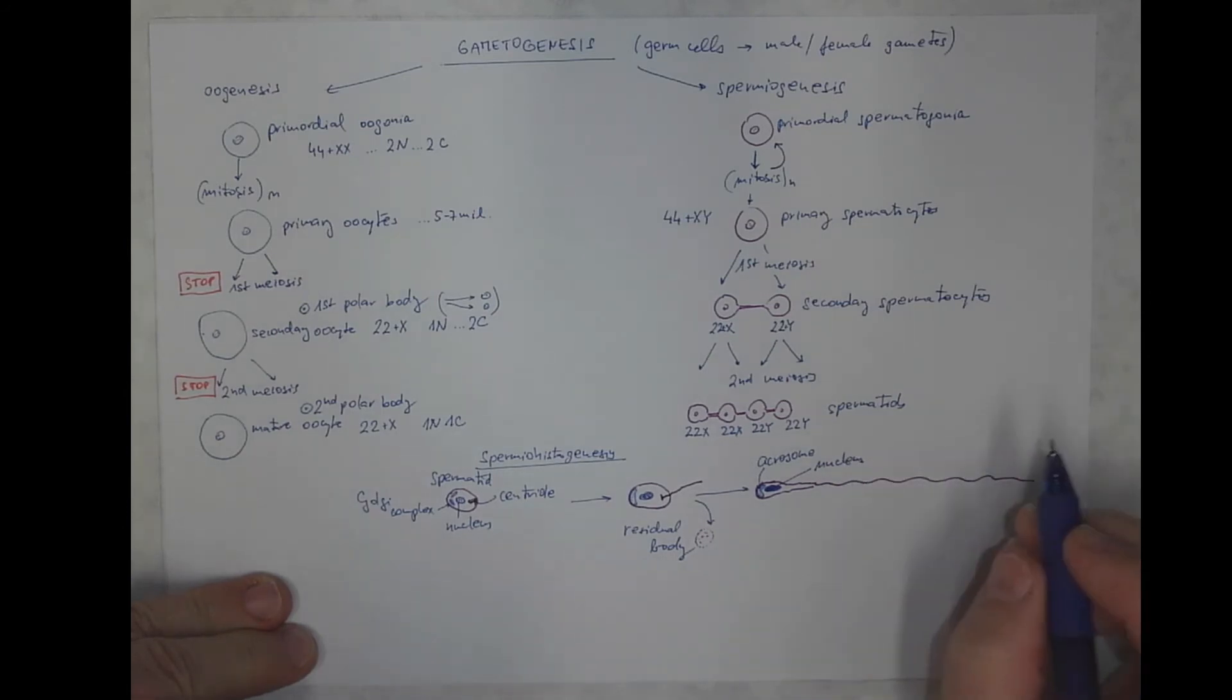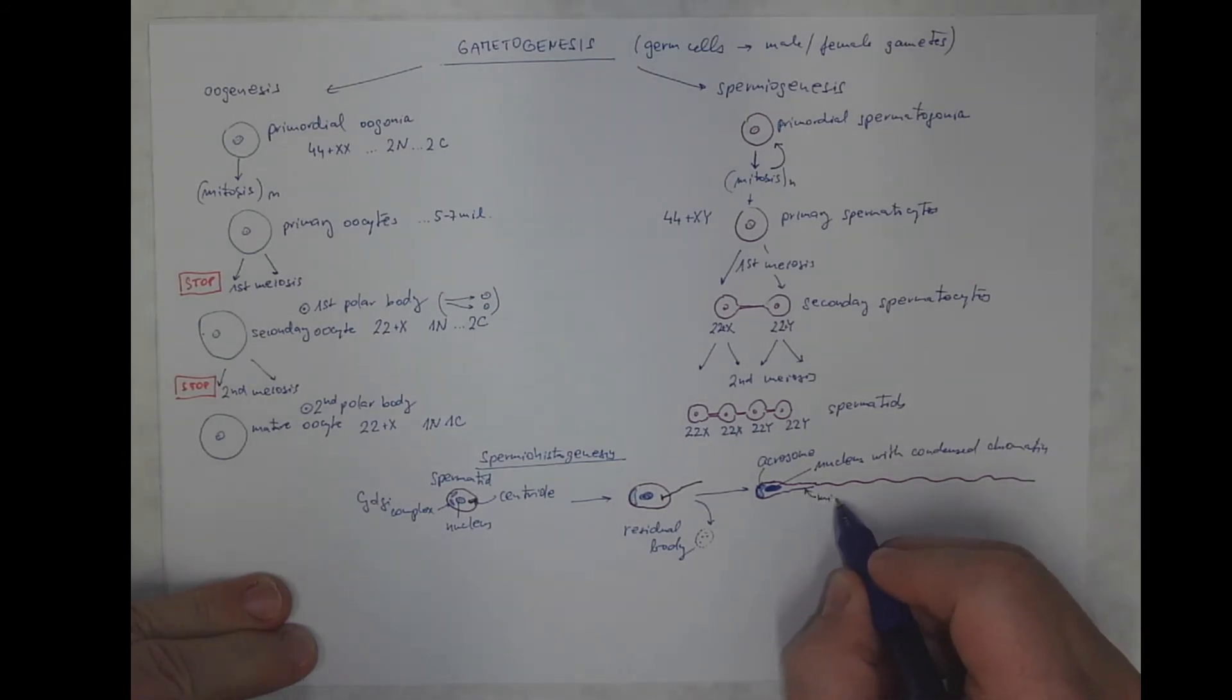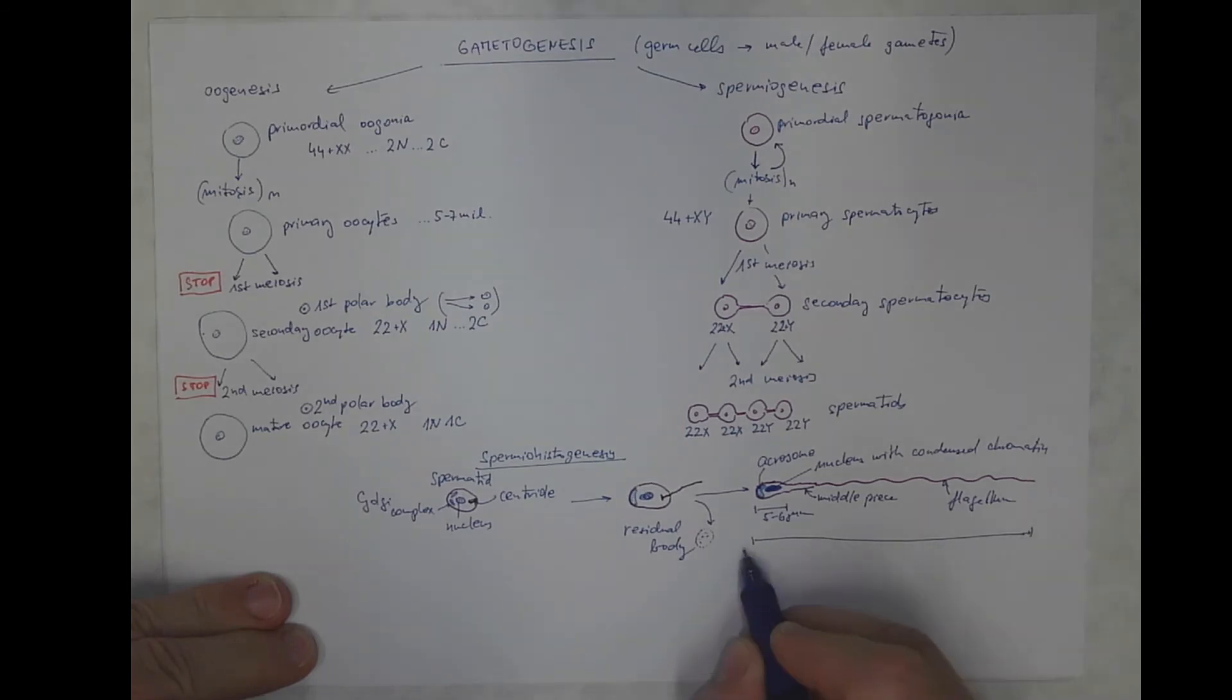The nucleus has a pycnotic, or highly condensed, chromatin. There is a middle piece here, with mitochondria, and there is a flagellum. So, the head has approximately 5 to 6 micrometers from the overall length, that is something between 50 to 60 micrometers.